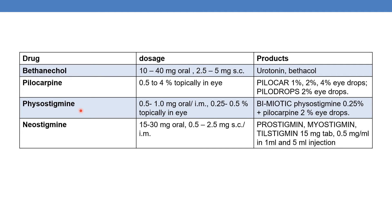Next is physostigmine. The available dosage is 0.5 to 1 mg oral or subcutaneous, or 0.25 to 0.5% topically in eye. The marketed product is Bimiotic, which contains two drugs: 0.25% physostigmine plus 2% pilocarpine eye drops.